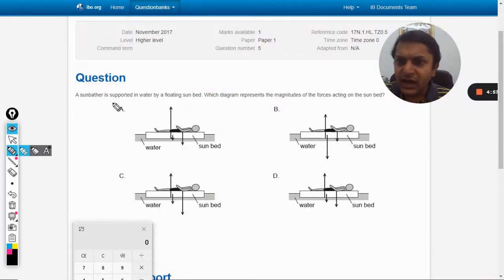Okay, in this question a sunbather is supported in water by a floating sunbed. Which diagram represents the magnitudes of the forces acting on the sunbed? So what are the forces that are acting on the sunbed?